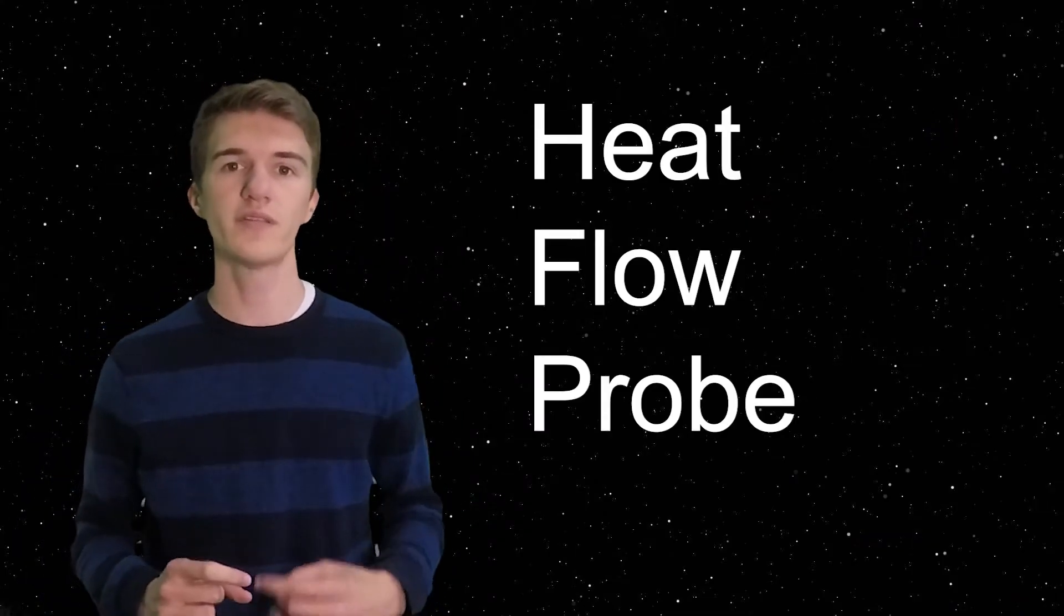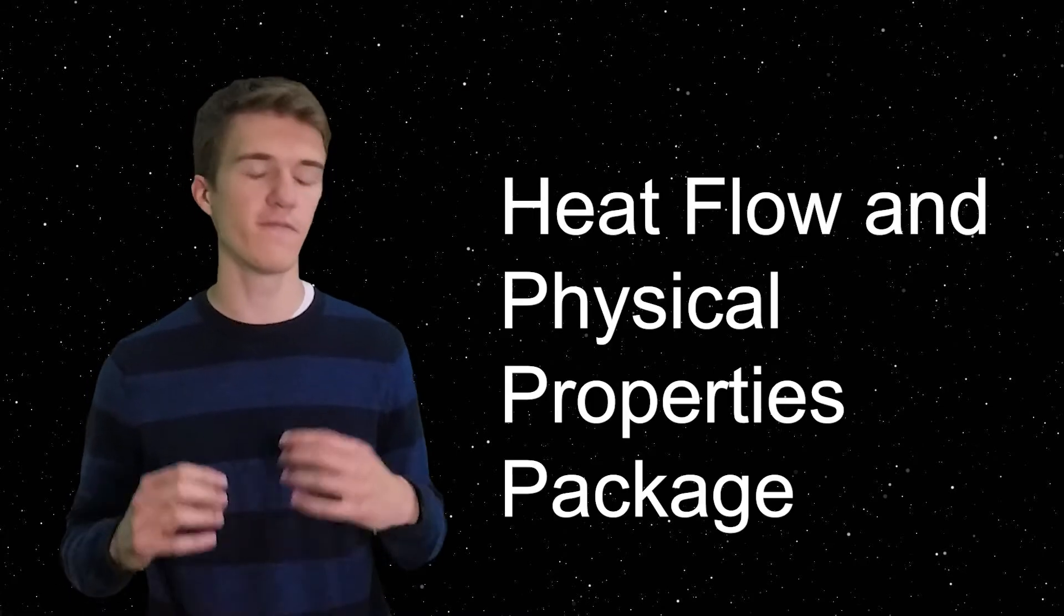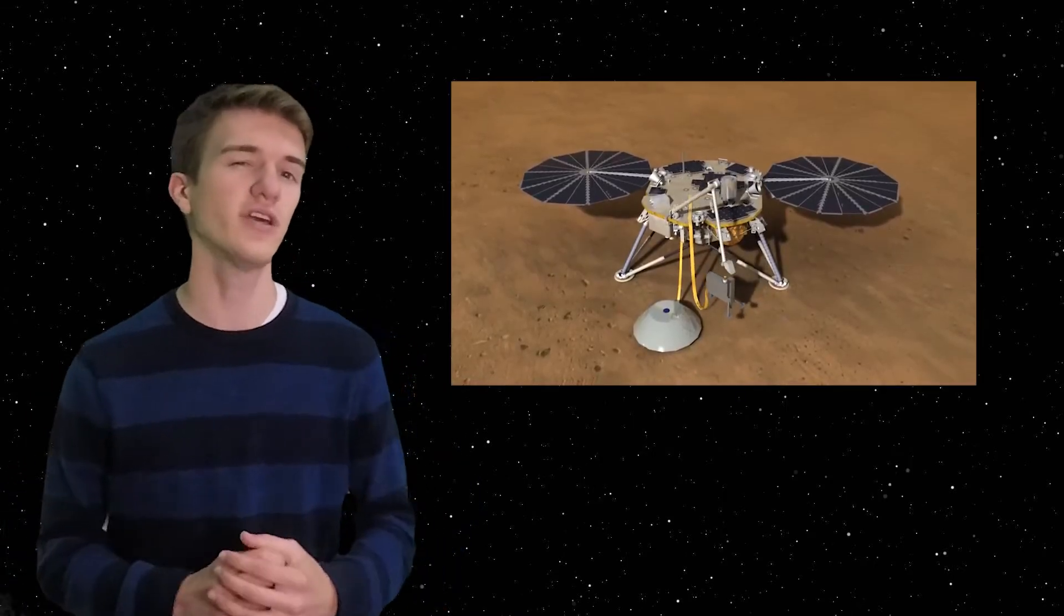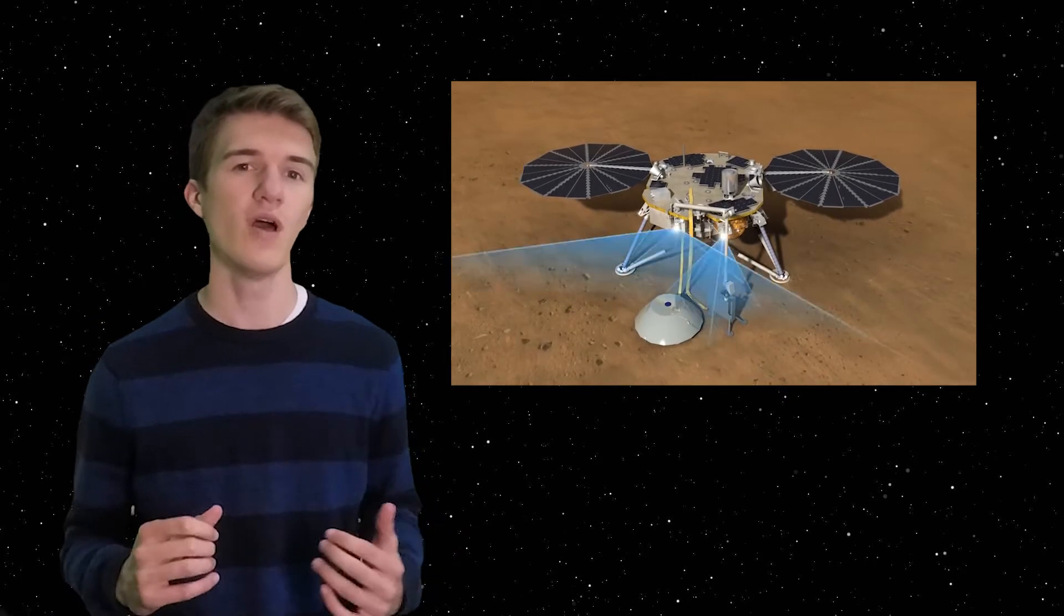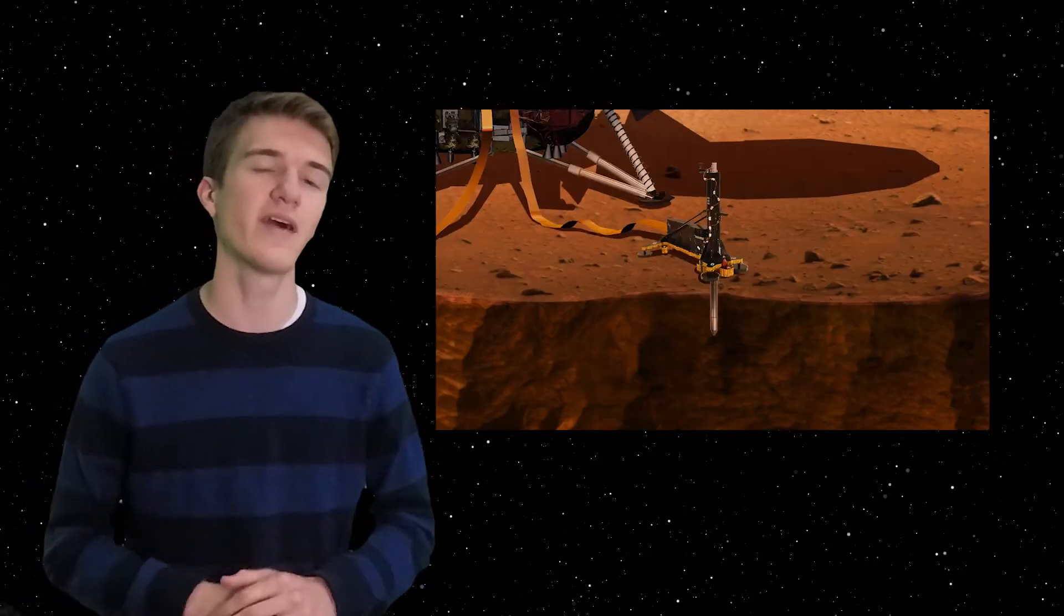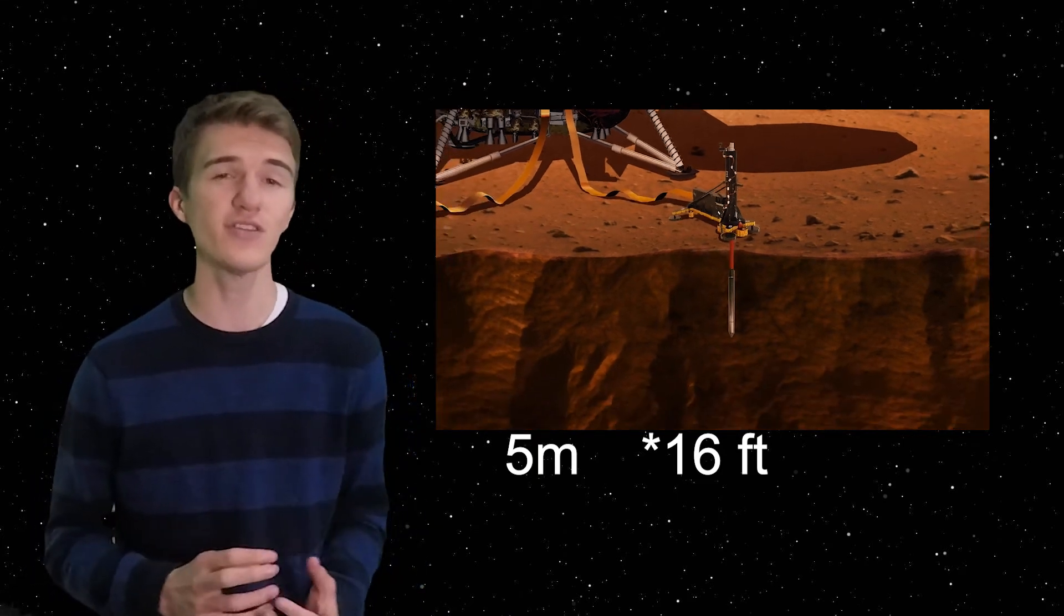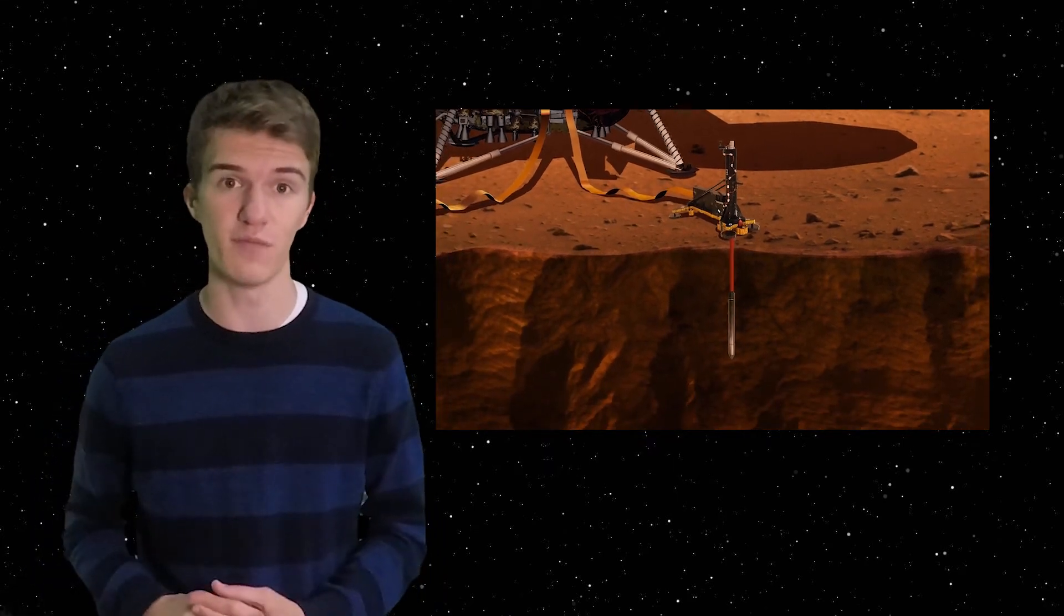So the second experiment is a heat flow probe, also known as HP³. And HP³ stands for Heat Flow and Physical Properties Package. This was developed by the German Aerospace Center. So HP³ is actually going to act as a self-hammering nail, which means it's going to dig itself all the way down to about 5 meters into the Martian regolith. However, that doesn't sound so far, that's actually the deepest we've ever dug into Mars.